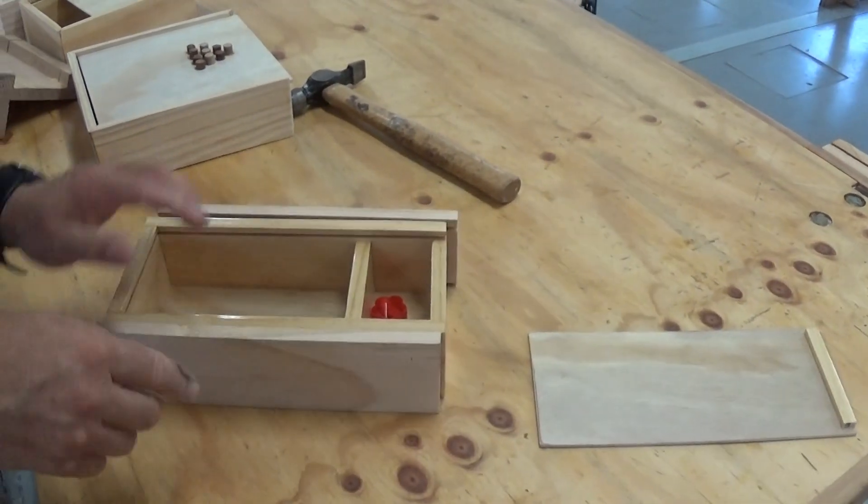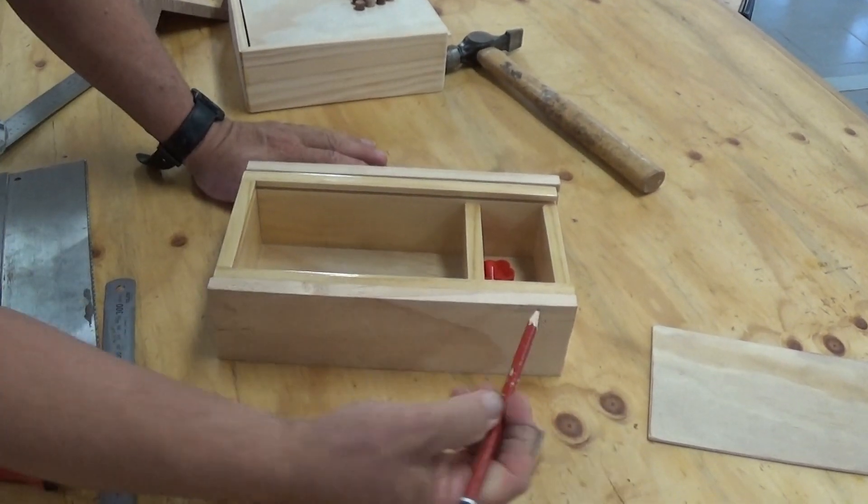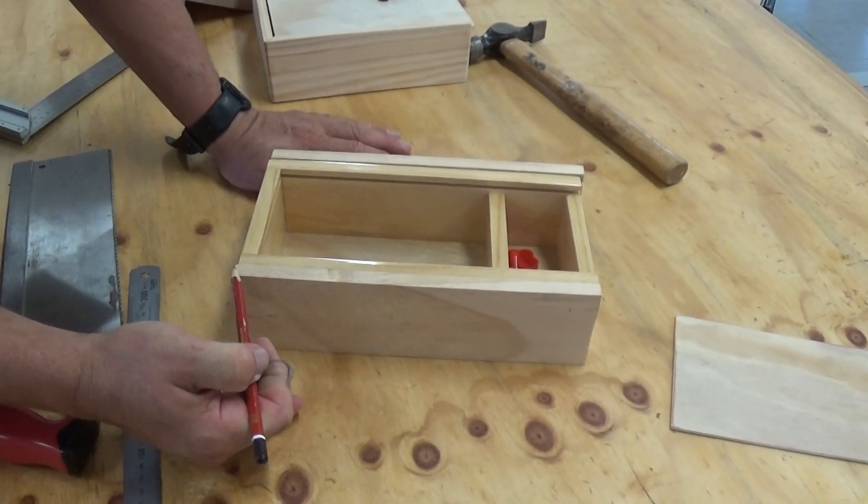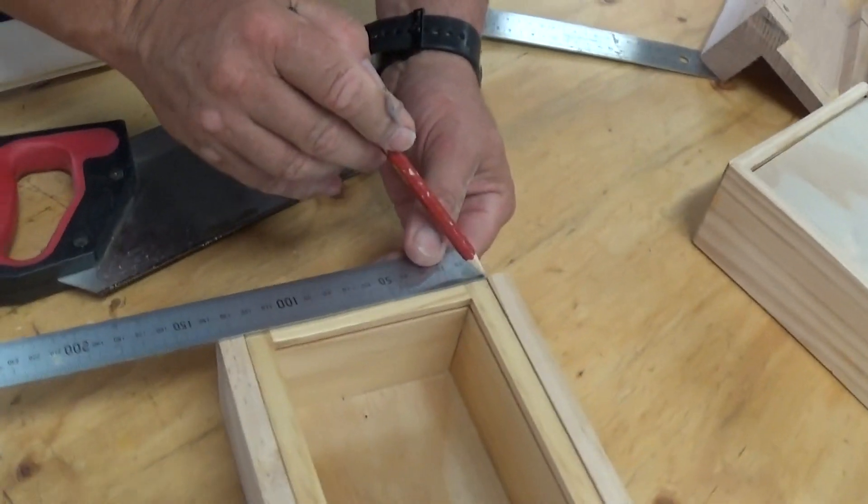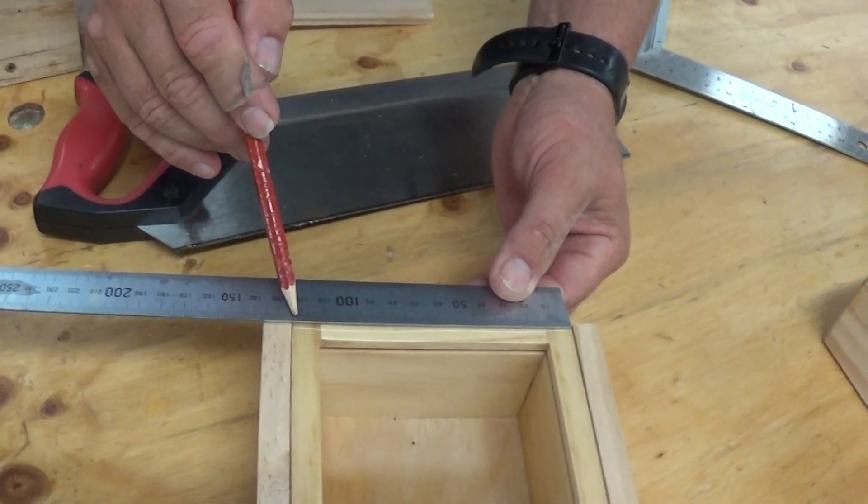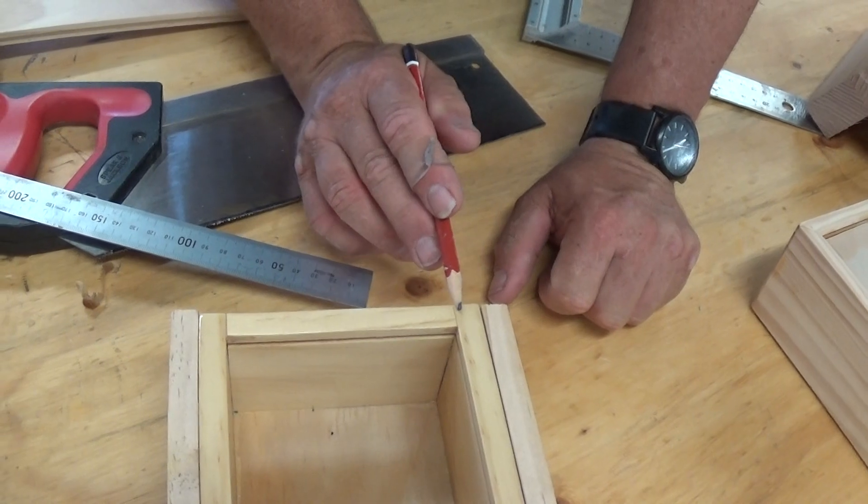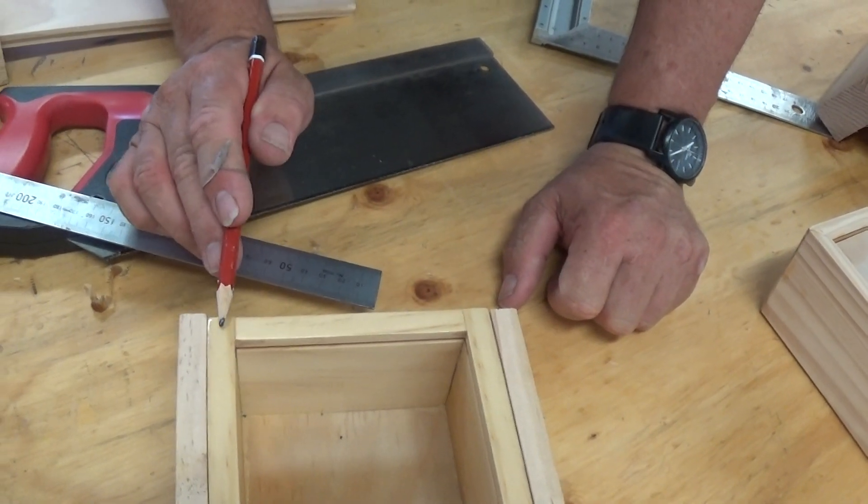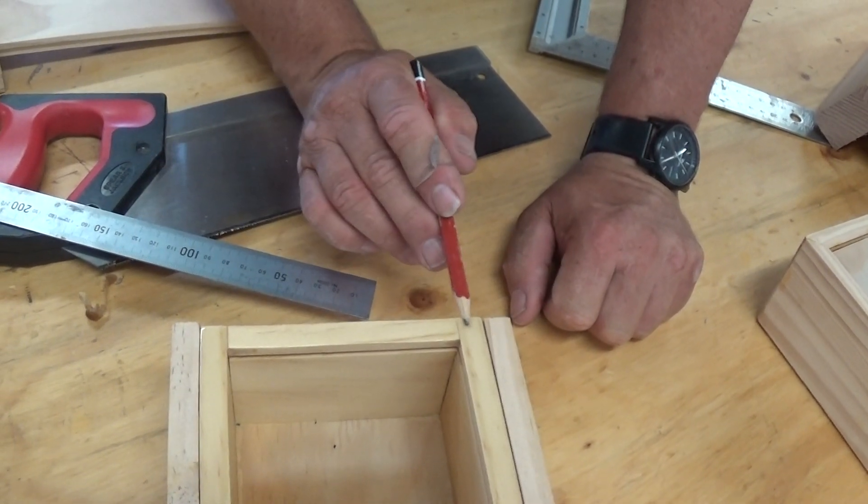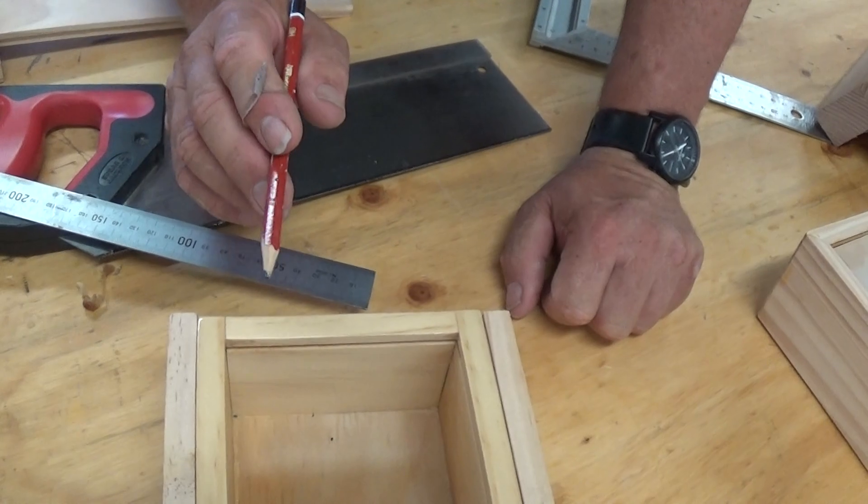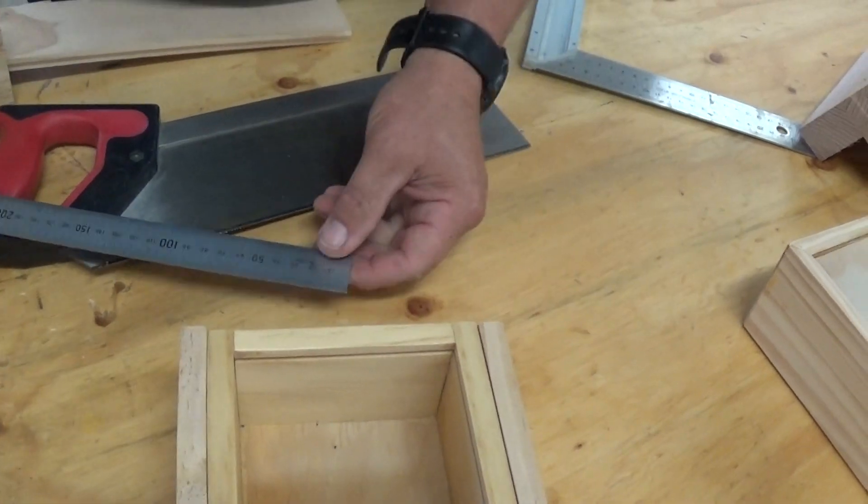Even though this is 250 here, this piece here is going to be 250. Now this one was 125 from there to there, but how far is the piece from here to here? This timber is 12 millimeters thick here and 12 millimeters thick there. So if we do 125 minus 12 minus 12, which makes it 125 minus 24, that should end up being 101 millimeters. So we'll just double check it.